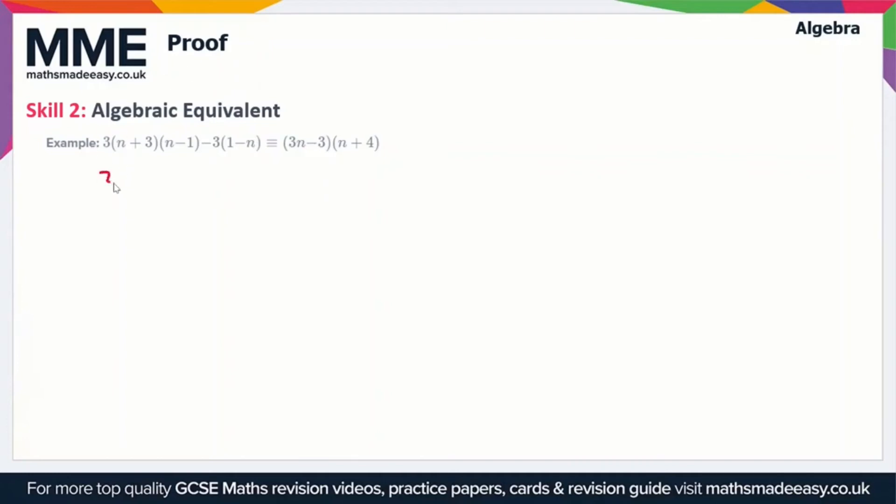So let's rewrite the expression. We have 3 lots of (n plus 3)(n minus 1) minus 3 lots of (1 minus n) and we want to show that that is equivalent to (3n minus 3)(n plus 4).